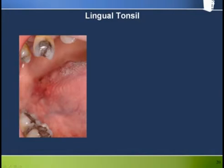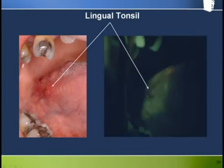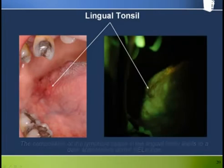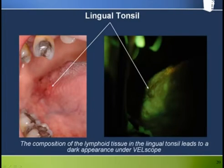After seeing the pronounced loss of fluorescence associated with lymphoid tonsillar tissue, it should be no surprise that the lingual tonsils also present quite darkly under fluorescence visualization.